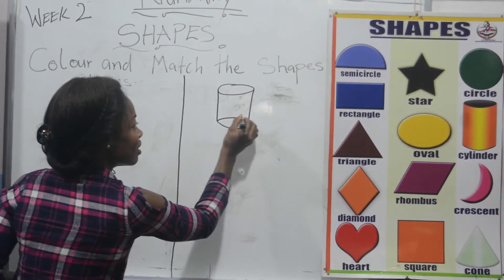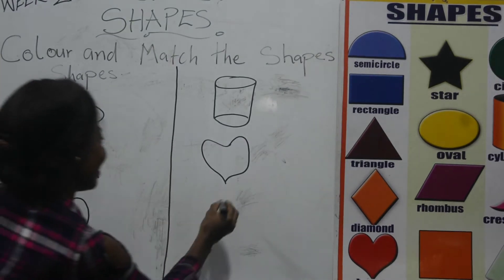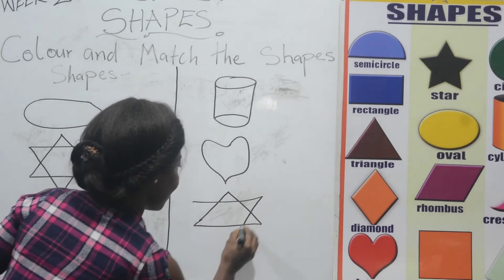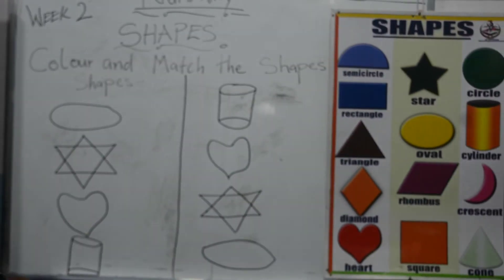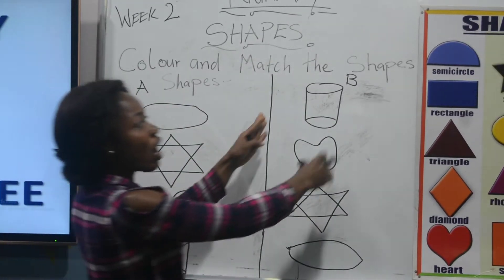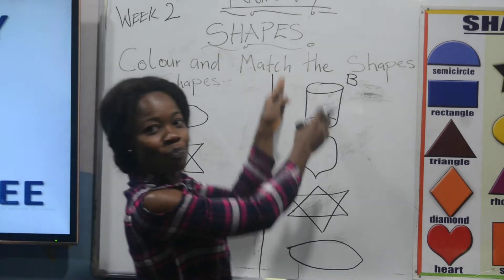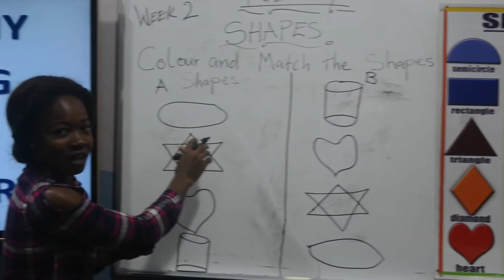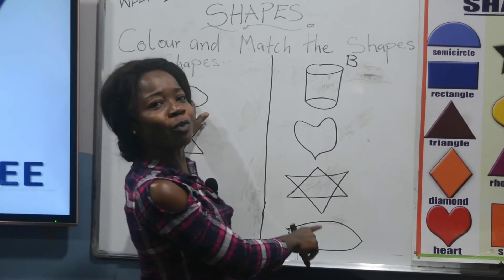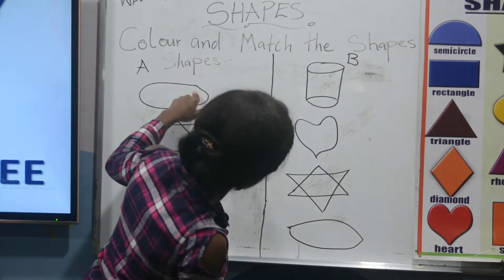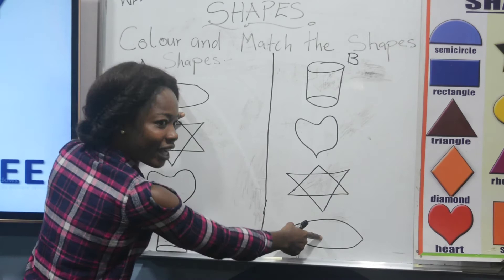We have Group A and we have Group B of the same shapes, and we are going to match Group A to Group B. We have oval in Group A, so we are going to look for another oval in Group B. Where is oval? Oval is here! So we match this oval in Group A with the oval in Group B.